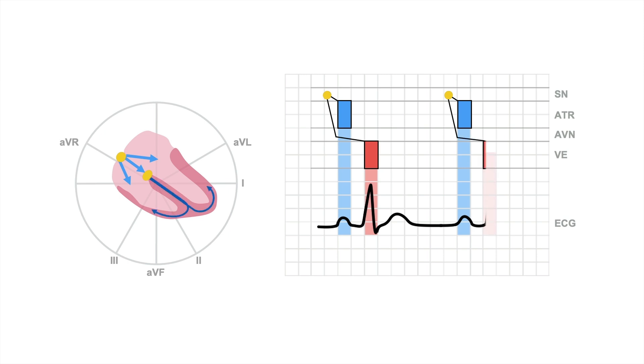Then it travels through the AV node down to the ventricles where it causes ventricular depolarization depicted by the red box again and the QRS complex down in the ECG. And then the cardiac cycle ends with the T wave after which the whole cycle starts all over again.